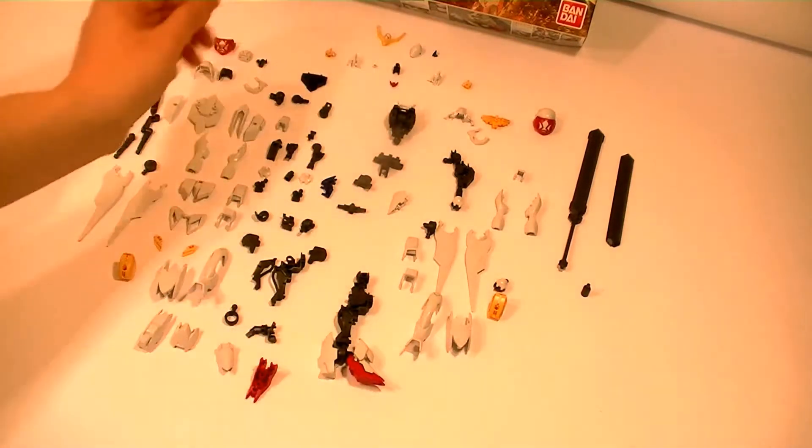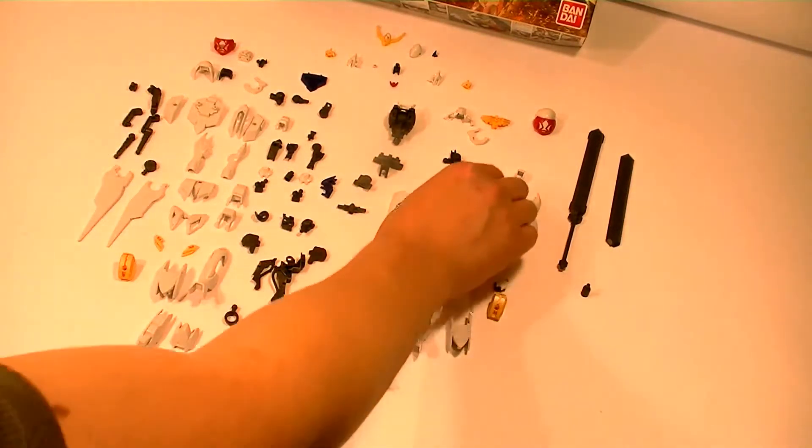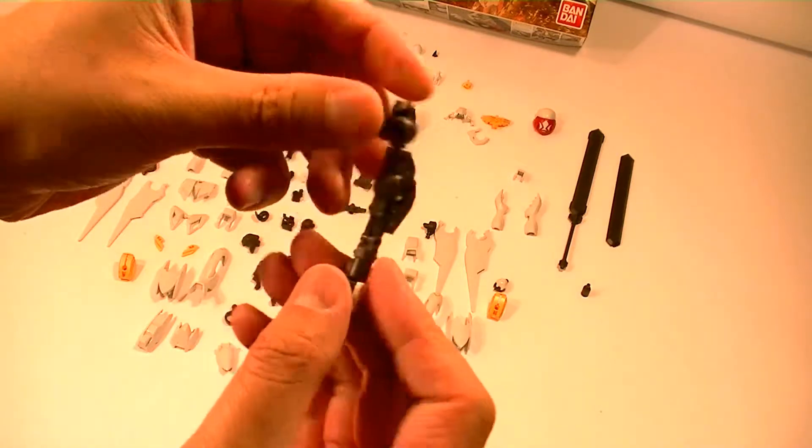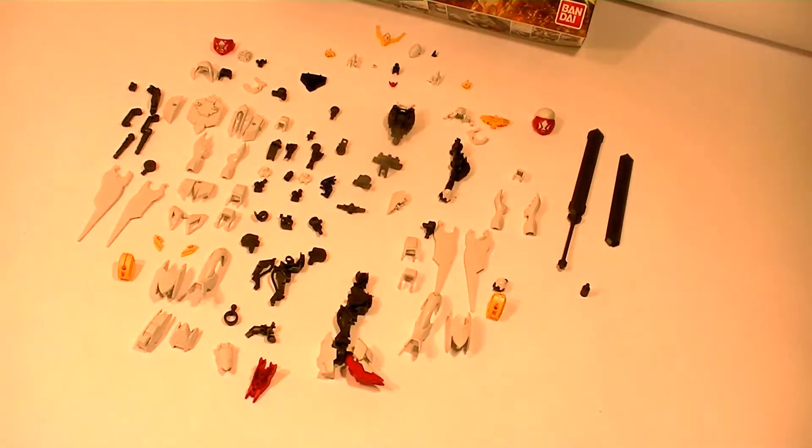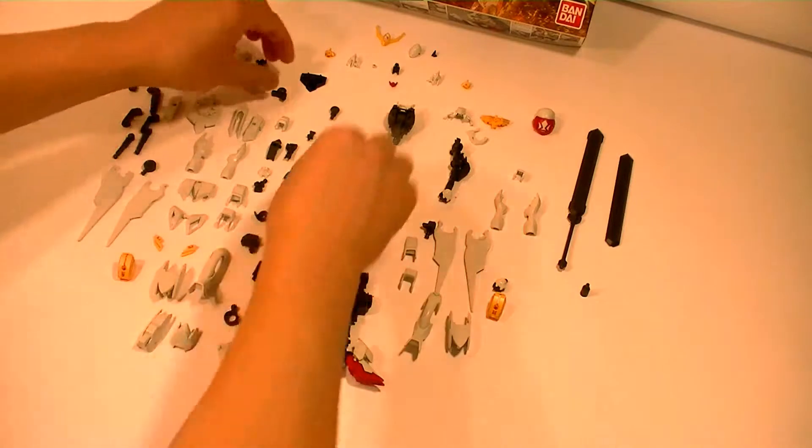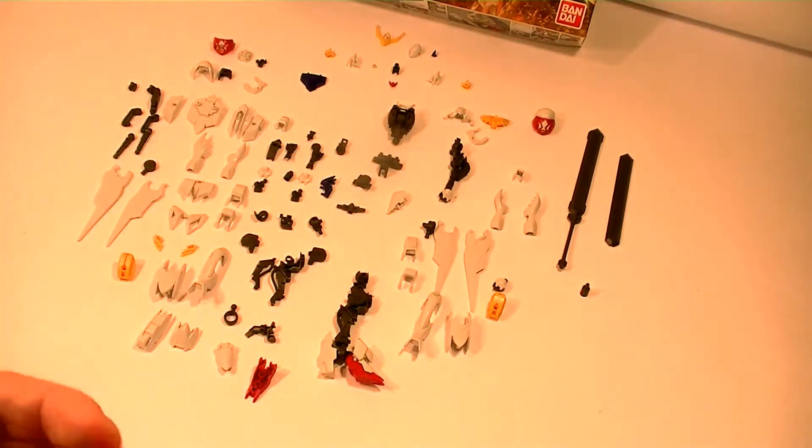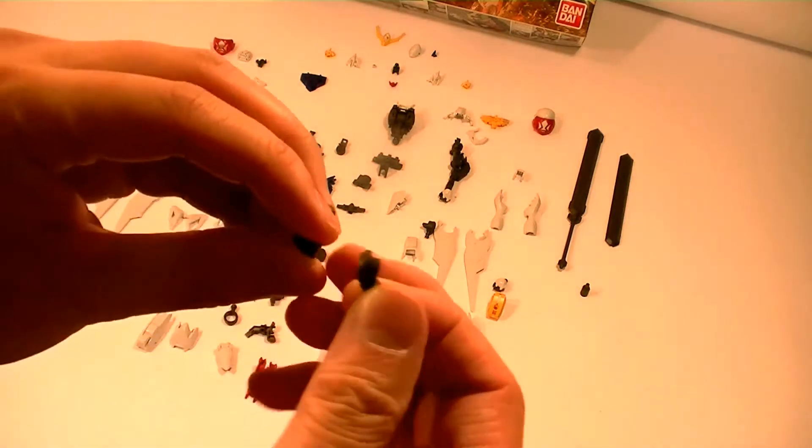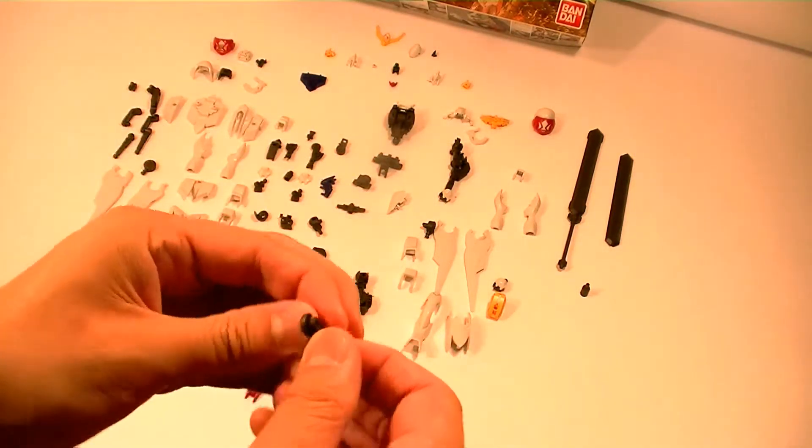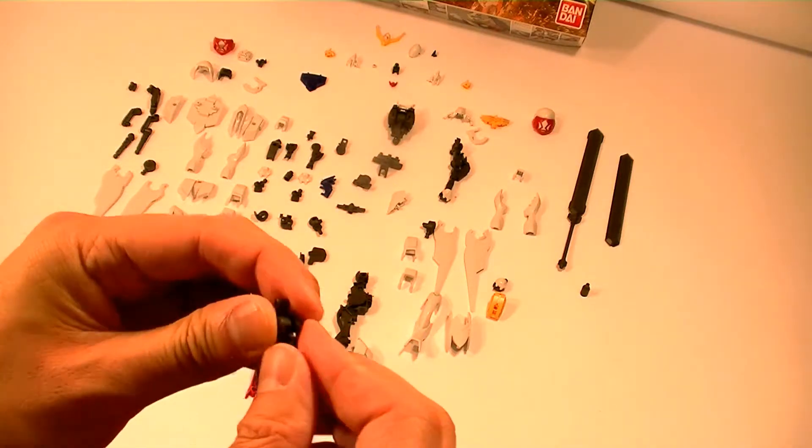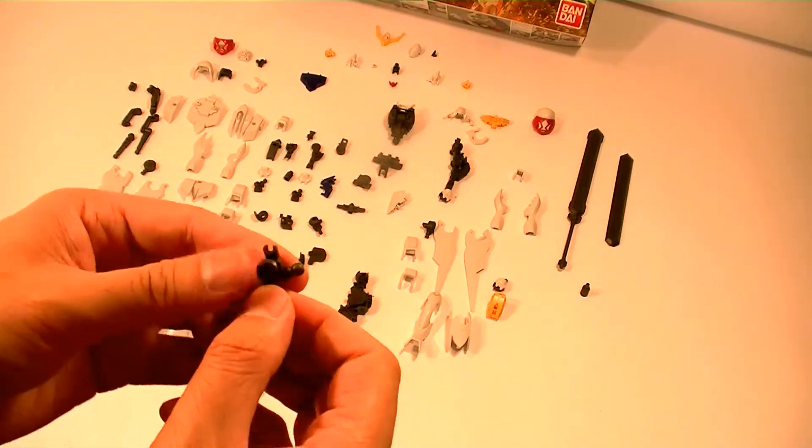So, let's go ahead and do the arm. This is how the arm should look like in the end. Next we'll move on to the arm. So, this is the top part of the shoulder. All you need to do is just pop these two together. Like so. That's it for that.